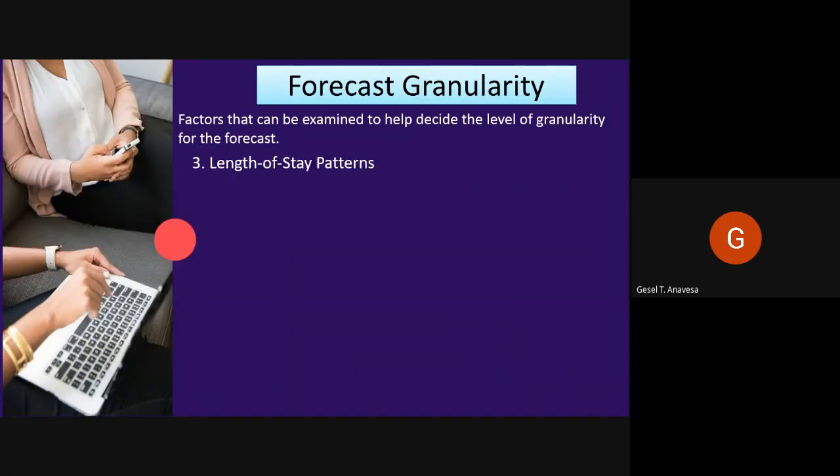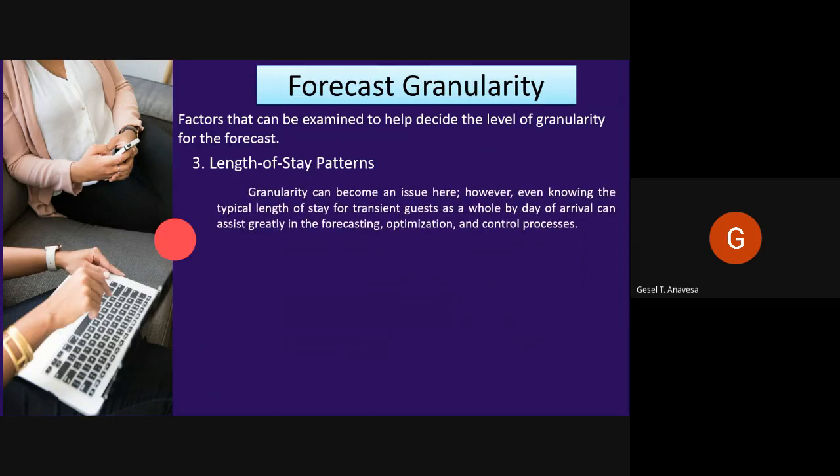Another factor is length-of-stay patterns. Understanding the typical length-of-stay patterns for different types of guests is the key to being able to deploy appropriate restrictions. Granularity can become an issue here; however, even knowing the typical length of stay for transient guests as a whole by day of arrival can assist greatly in the forecasting, optimization, and control process.